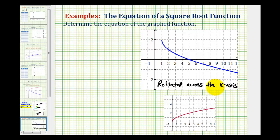Next to determine how it's been translated, it'll be helpful to analyze corresponding points on the basic square root function and our blue square root function. So for example, this point here has the coordinates and this point here has coordinates.